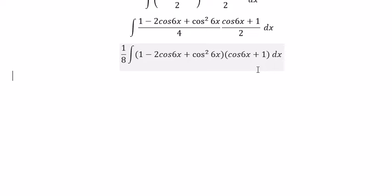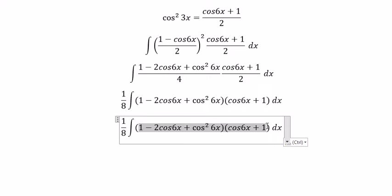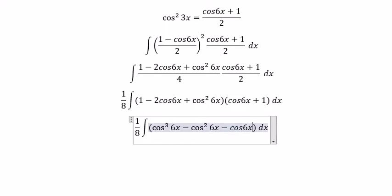Later that we multiply together, so we will got about, when we multiply together, we will get about cos³6x - cos²6x - cos6x + 1.